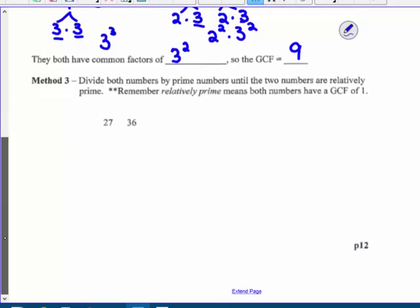Method 3, divide both numbers by prime numbers until the two numbers are relatively prime. So it's called a chart method. Some people call it the ladder method. Remember that relatively prime means that both numbers have a GCF of 1.